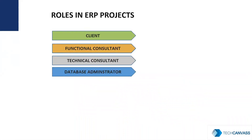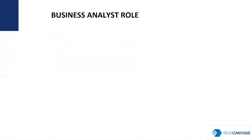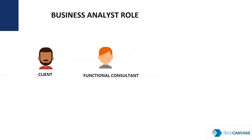In a typical ERP system, there are a few roles: Client, Functional Consultant, Technical Consultant, and Database Administrator. BA fits as Functional Consultant. The Client gives the requirement. The Functional Consultant understands the functionality of ERP, the gap between the existing functionality and the requirement, and provides solutions to the customer. He or she works closely with the client.